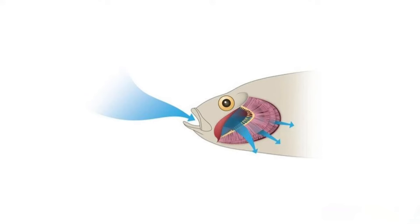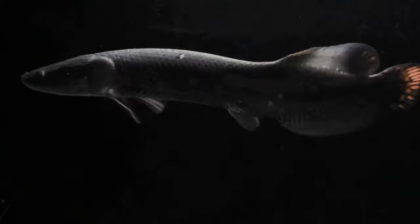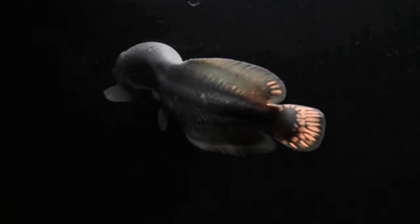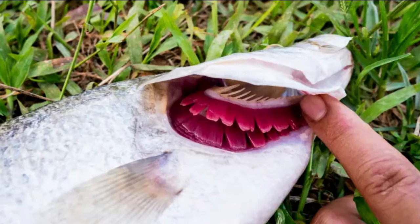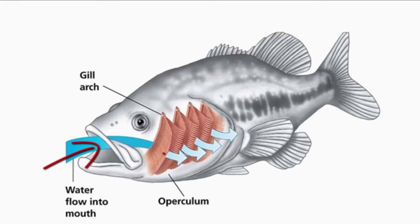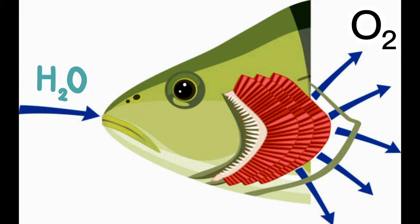The key to a fish's ability to breathe underwater lies in their gills. Gills are the equivalent of our lungs and are responsible for extracting oxygen from the water. A fish's gills are made up of tiny, finger-like projections called filaments, which are covered in small, hair-like structures called cilia. The cilia create a current of water over the filaments, allowing the fish to extract oxygen from the water.